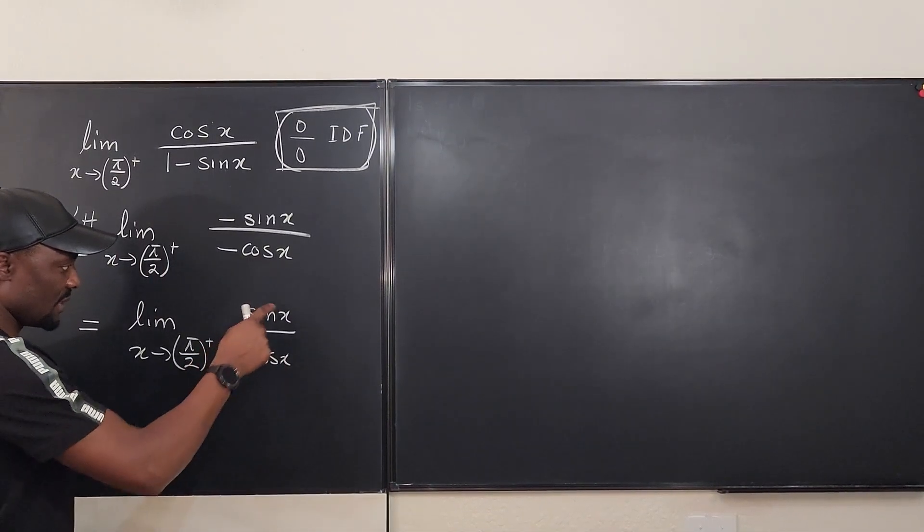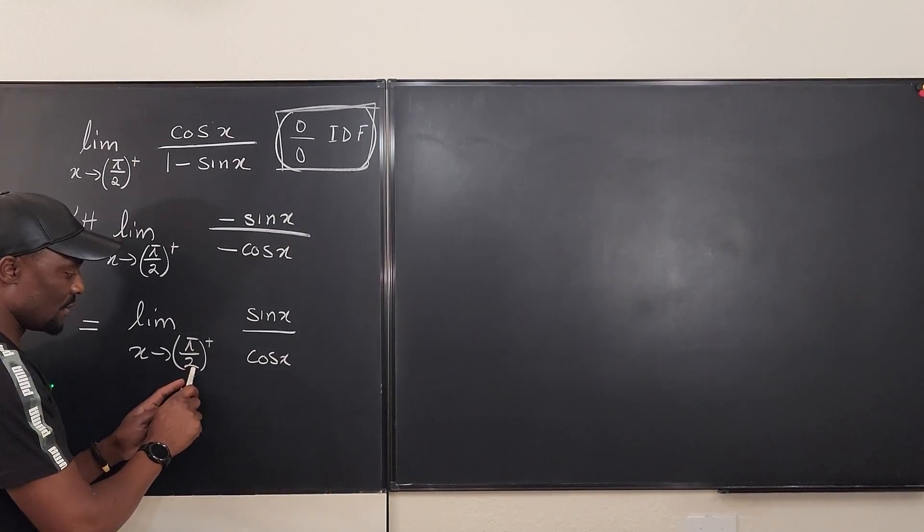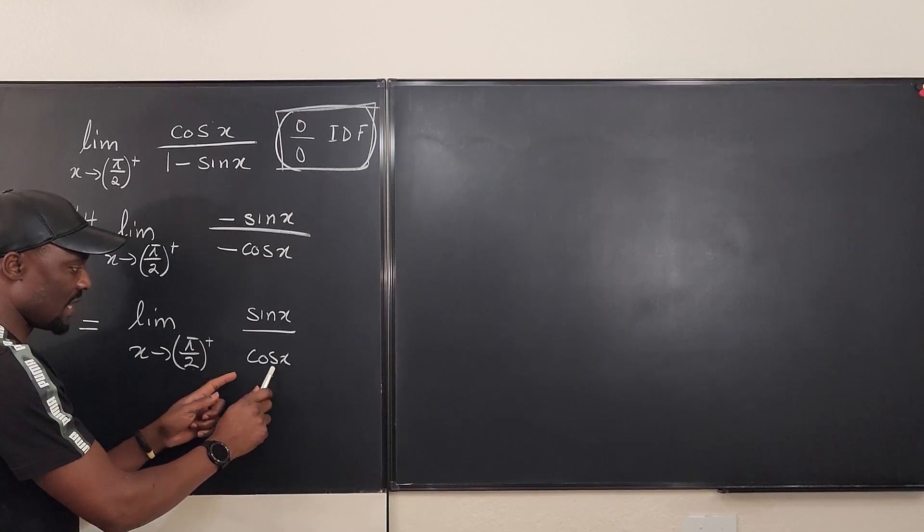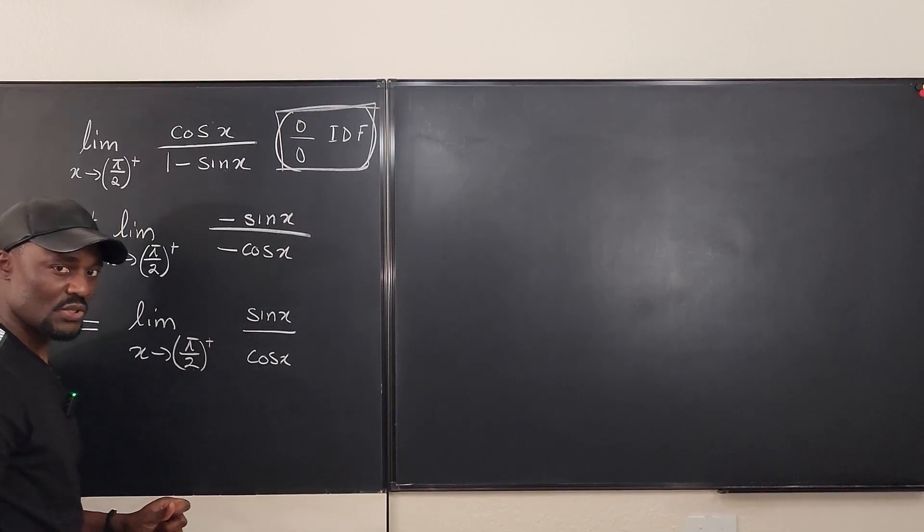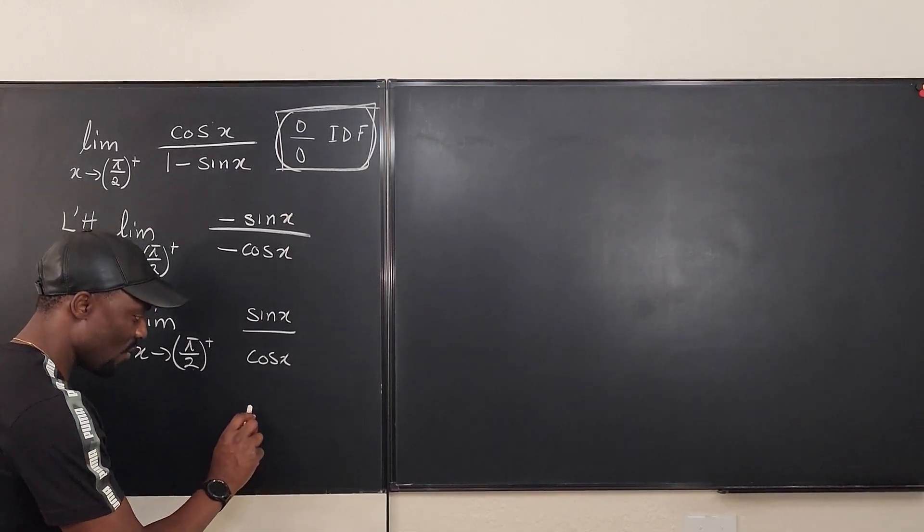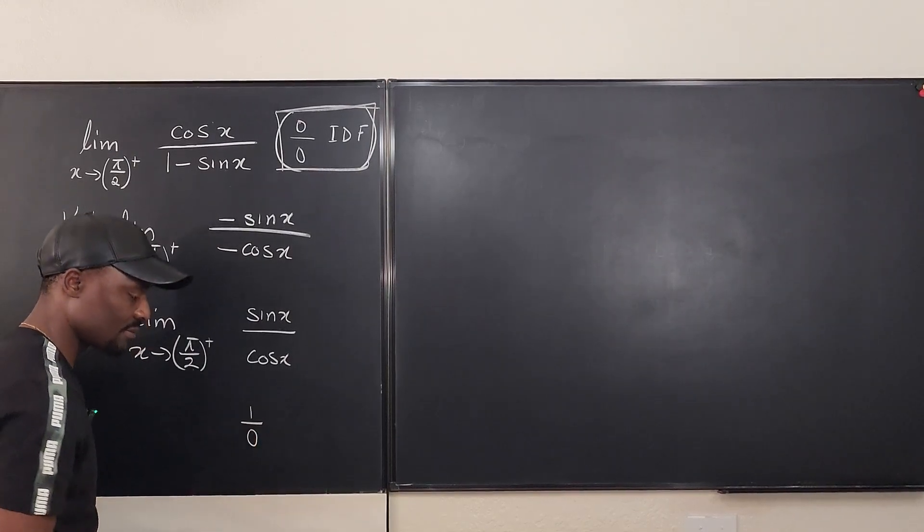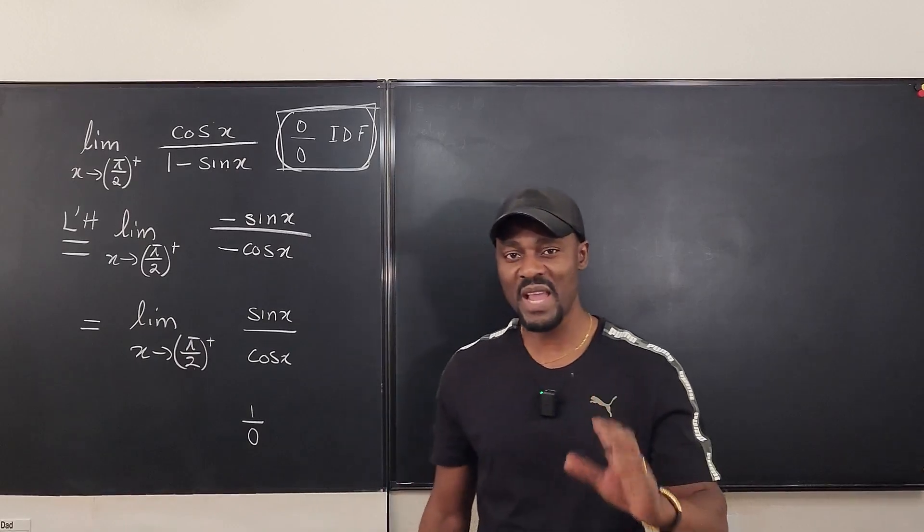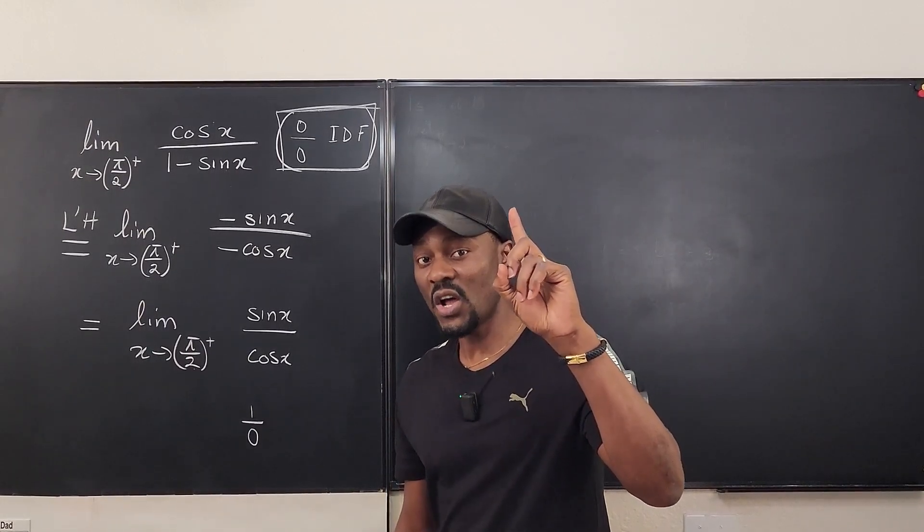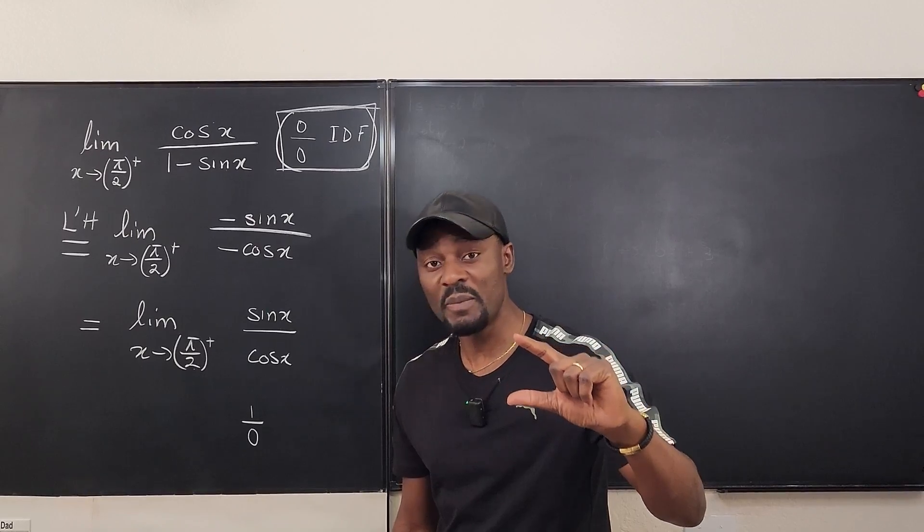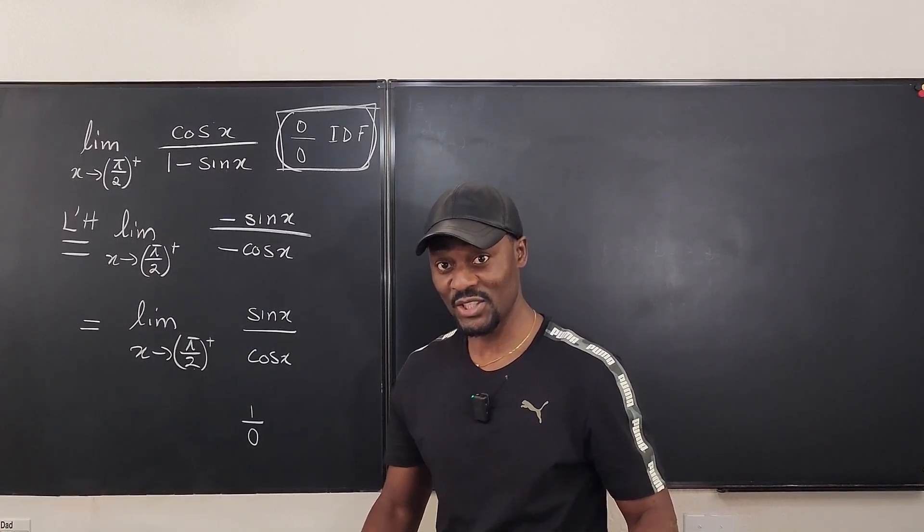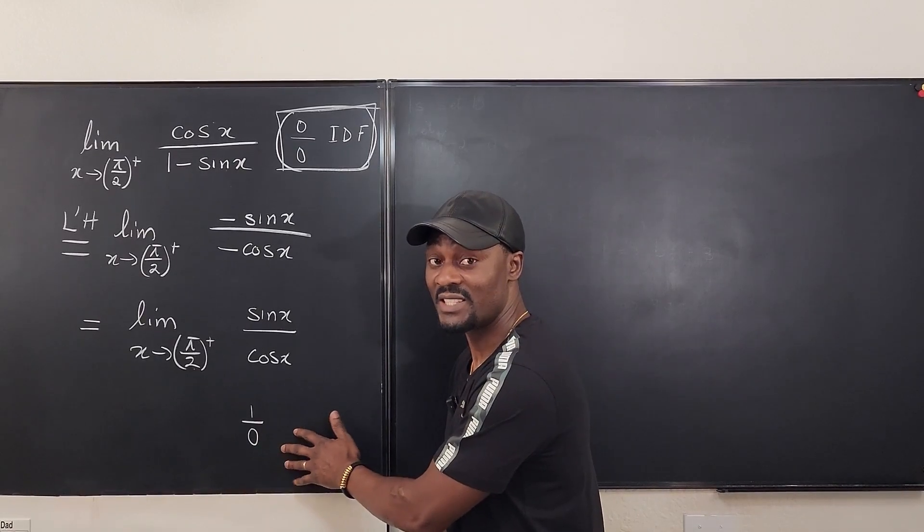Let's plug this back in. Pi over 2 is going to be 1. Plug it in here, it's going to be 0. So you have 1 over 0. Now, I've seen a common mistake that many students make. You get a constant over 0 does not make your answer infinity. No, it does not mean the limit is infinity.